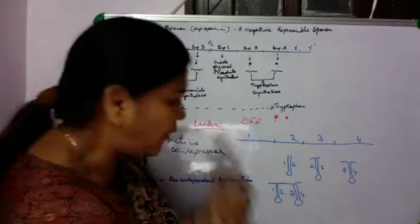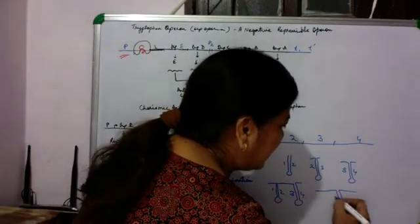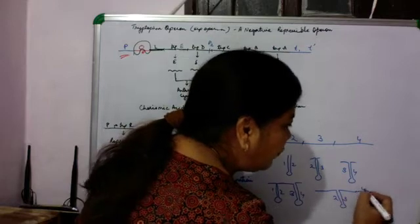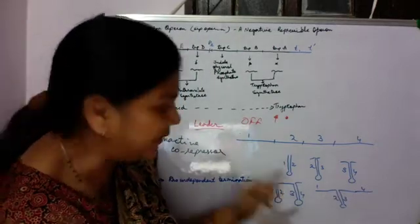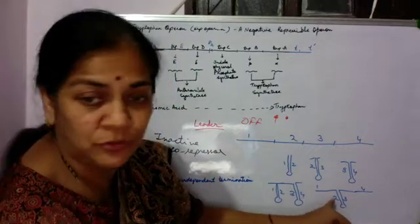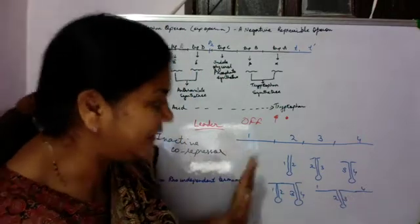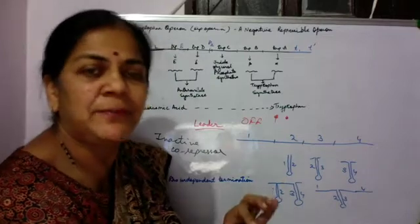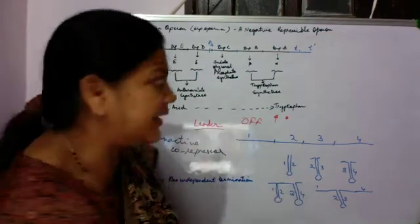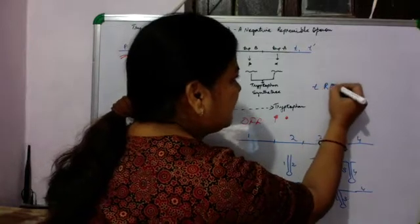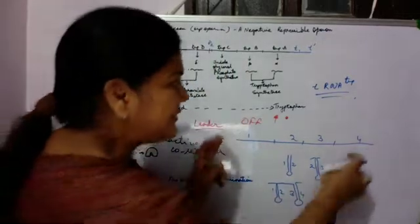Under conditions when region 1 cannot pair with region 2, region 2 is free to pair with region 3, and region 4 is then unpaired. So there are two situations: in the first, regions 1–2 pair and regions 3–4 pair; in the second, regions 2–3 pair and region 4 is unpaired. What determines which pairing occurs depends on the level of charged tRNA carrying tryptophan in the cell.